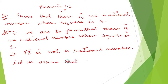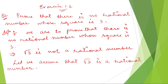In order to prove this, let us assume that root 3 is a rational number. Let us assume there is a number called root 3 which is a rational number. If it is a rational number, we can write down root 3.